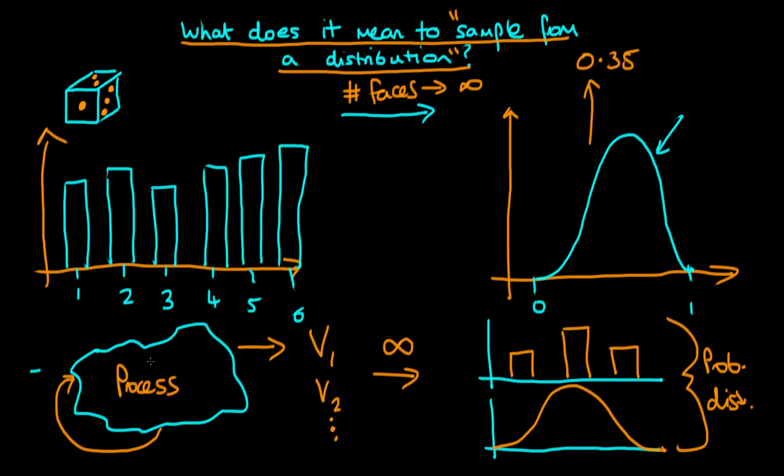The idea is that when you sample from a distribution, essentially what you are doing is you are sampling from the process which, if sampled from an infinite number of times, would yield the histogram which looks like the distribution. So it's only when we think about sampling as being this way around that it actually makes sense to sample from a distribution. Otherwise it seems like quite a strange concept.